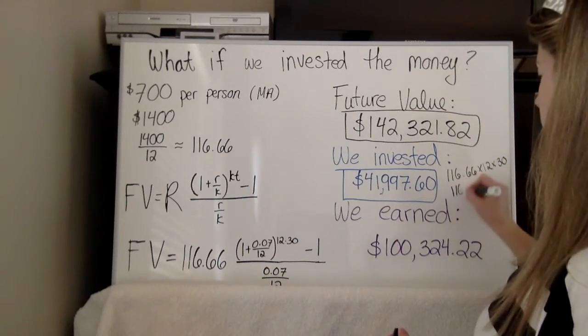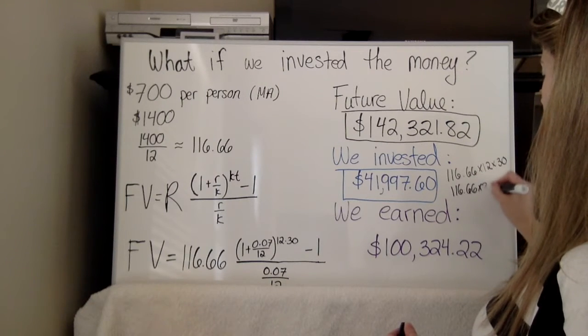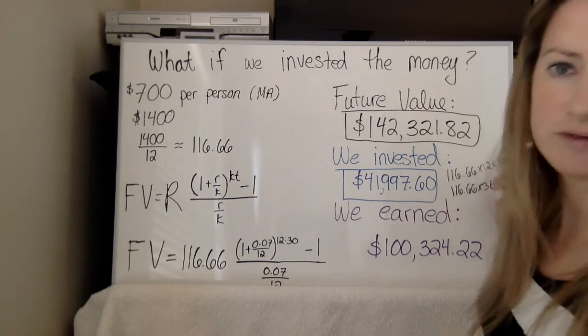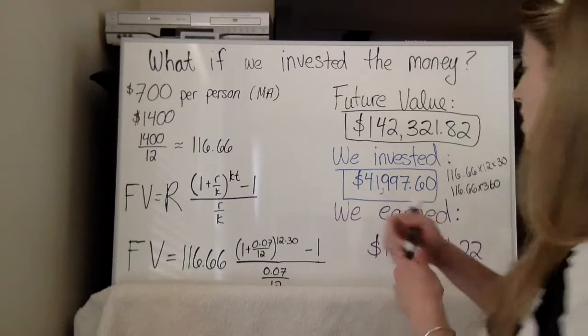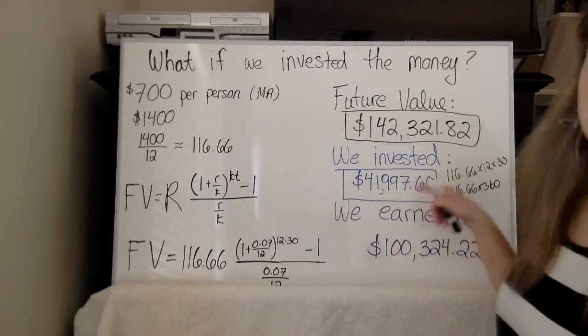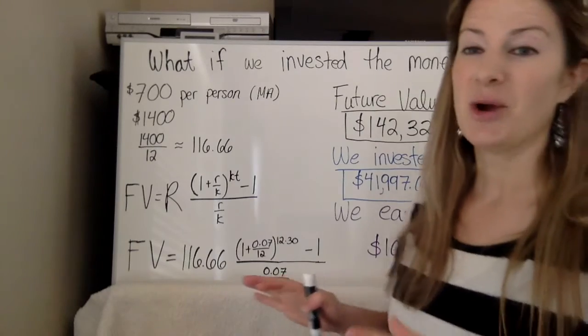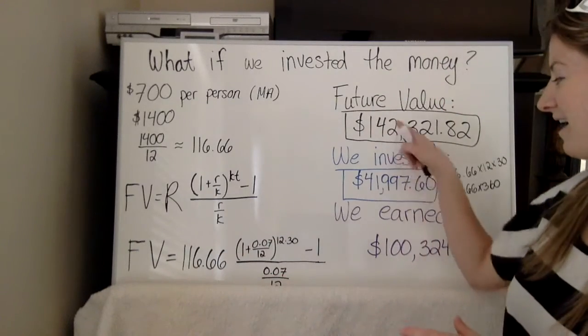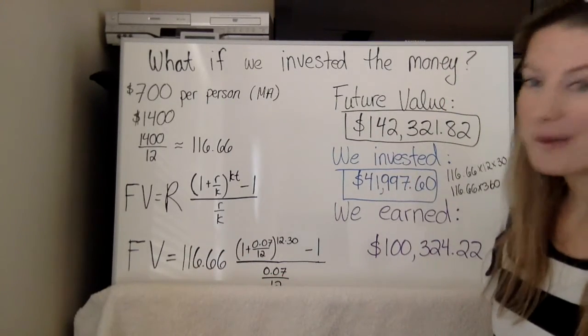You can also think of it as we make 360 $116.66 payments into the account. So you could also think of it as $41,997.60. Now look at this. We can do a little estimation here. Approximately how much did we earn? This is crazy.